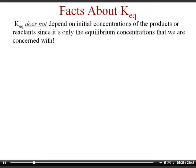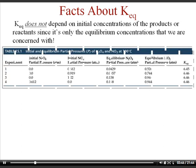Here are some facts about equilibrium constants. The equilibrium constant does not depend on the initial concentrations of the reactants or products, since we're only worried about equilibrium concentrations. In an experiment where you change the initial pressure of N2O4 and NO2, your equilibrium partial pressures are established, and when you take products divided by reactant pressures, you still get the same equilibrium constant — it's always around 6.45.